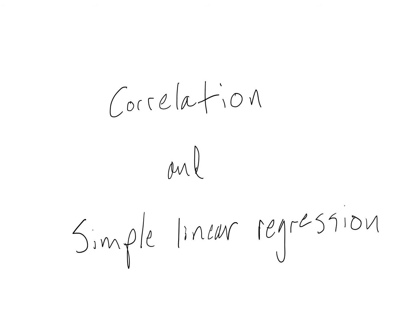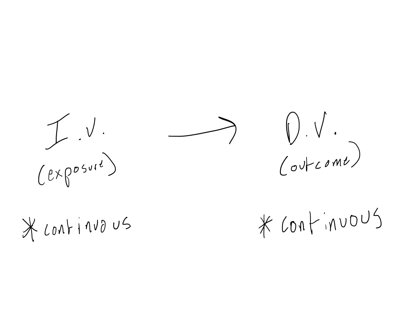This video is a conceptual introduction to correlation and simple linear regression. We use correlation when we want to test the association between two variables, and both our independent or exposure variable and our dependent or outcome variable are continuous.